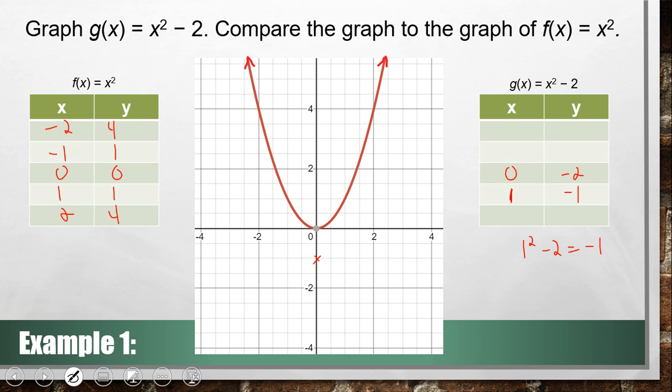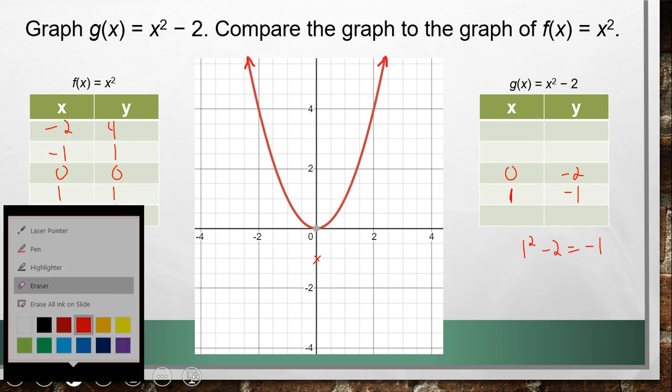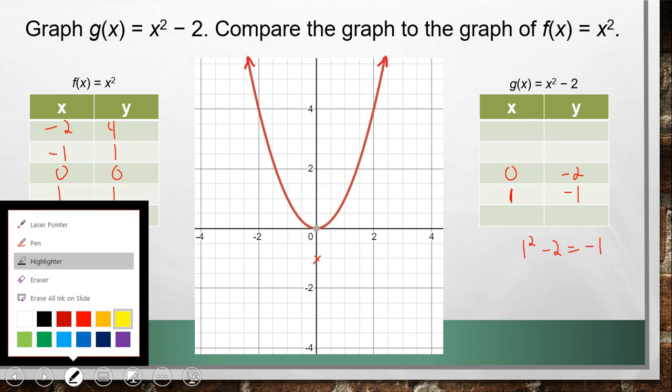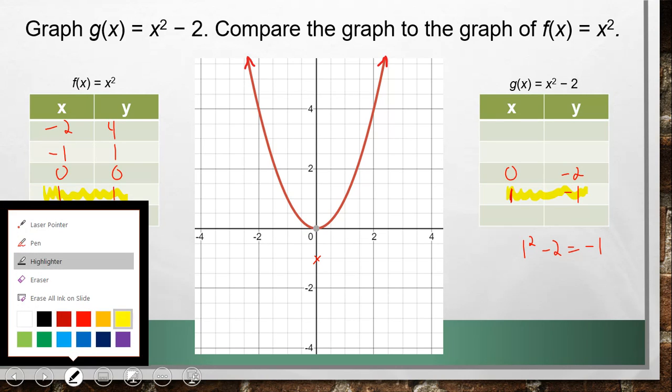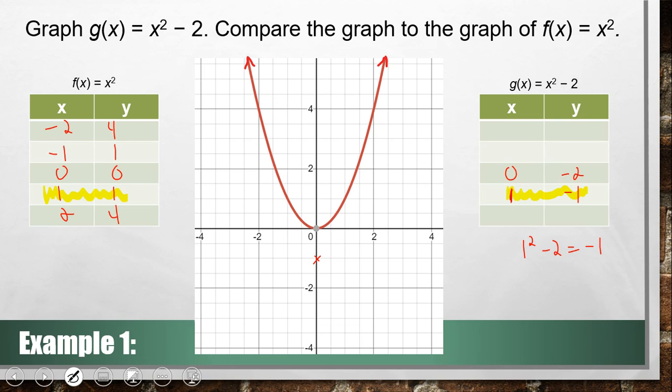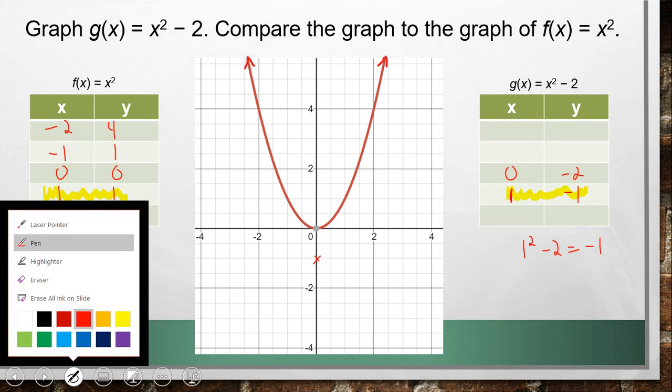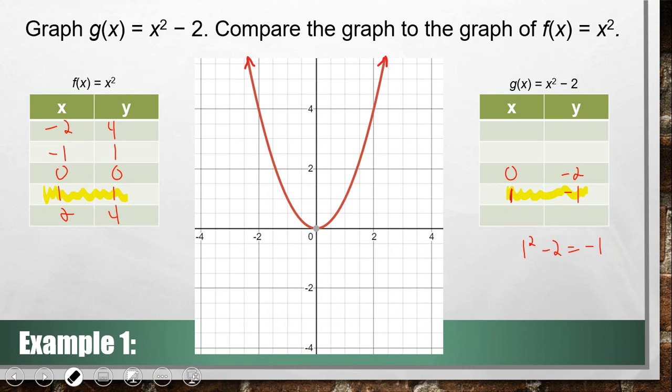Remember, if we look at our parent function, our parent function was at (1, 1). And our new function, shifted down two units, is at (1, -1). So we can go ahead and put in the rest of our points. I graphed my vertex wrong because this graph is going up by two. So there's my vertex. (1, -1) would be here, and then I can have the same point here. Remember, both of these graphs have an axis of symmetry at x = 0.